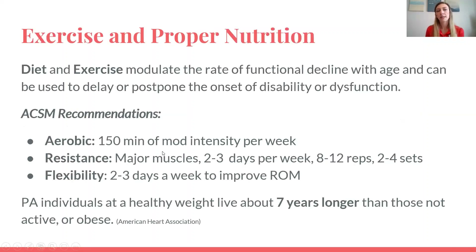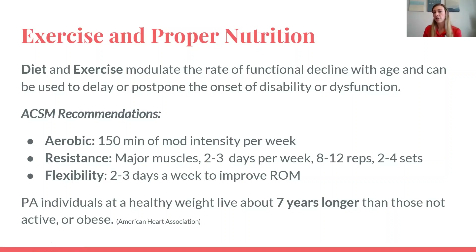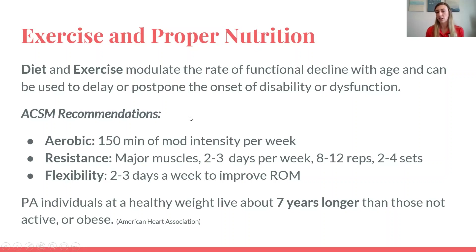Exercise and proper nutrition: diet and exercise modulate the rate and function of functional decline with age and can be used to delay or postpone the onset of disability or dysfunction. The ACSM recommends 150 minutes of moderate intensity exercise per week. I'll be talking about aerobic and resistance training in a separate lecture. If you balance exercise and diet, it can help you live longer and a healthier life.